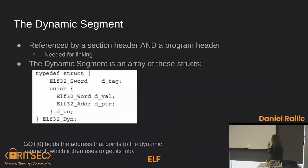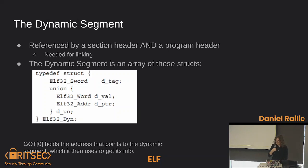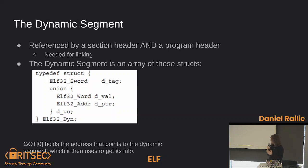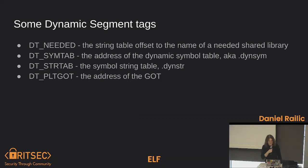Then you have the dynamic segment, which is referenced by both the section header and program header because it's needed for linking. It just kind of helps the dynamic linker make decisions and know what stuff is. The first entry in the GOT offset table is the address of the dynamic segment. Here are the different types of entries for dynamic segments.